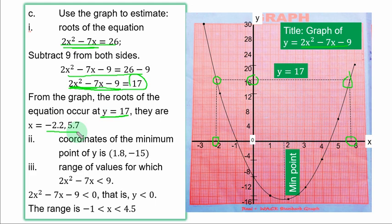Roman numeral 2: coordinates of the minimum point of y — that is the lowest point of the curve. When you say coordinates, you find both the s and y values. At the minimum point, trace to the s-axis and trace to the y-axis. For the s-axis you have 1.8, and for the y-axis you have -15. So the coordinate of the minimum point is (1.8, -15).